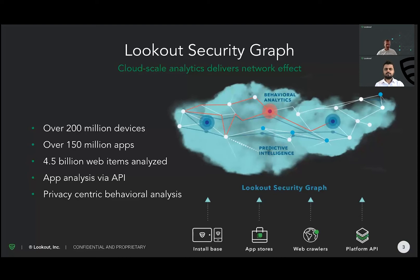We acquire apps from official stores — Google Play, Apple App Store — and every web resource, including web crawlers. On mobile devices, we're also able to do binary acquisition processes. So if you are the only person in the world targeted by a dedicated attack, Lookout for Work or Lookout Consumer is able to acquire that binary and our AI machine learning process can start building coverage for new families.